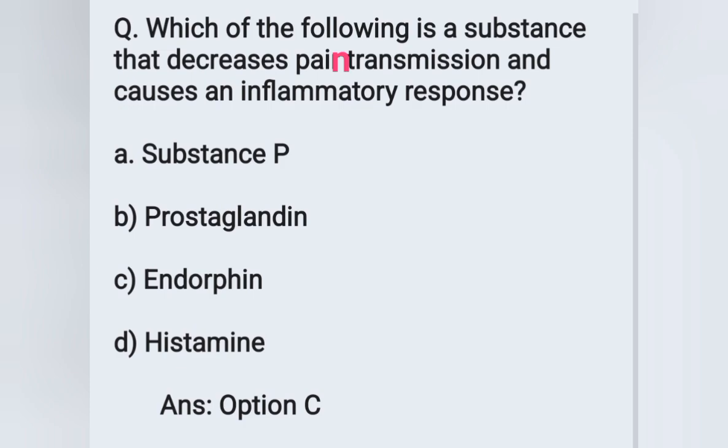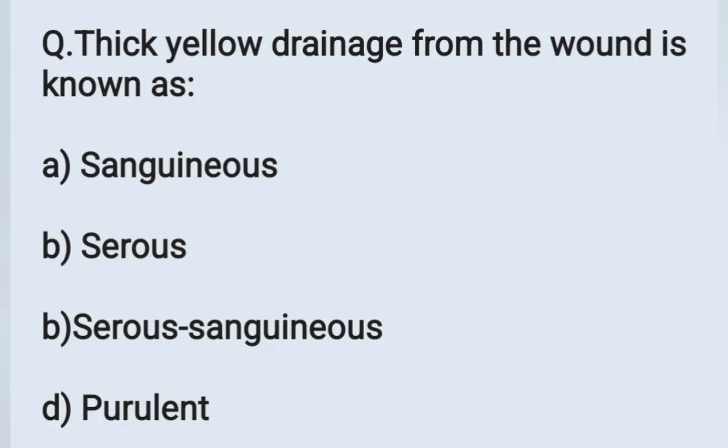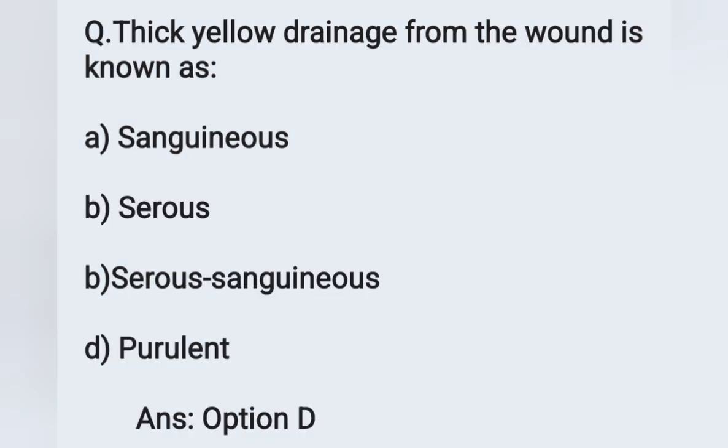Next question: Thick yellow drainage from a wound is known as — option A: sanguineous, option B: serous, option C: serosanguineous, option D: purulent. Thick yellow drainage indicates the wound is infected. Once infected, there is a chance of pus release, which is the thick yellow drainage. That is known as purulent. Option D is the correct answer.